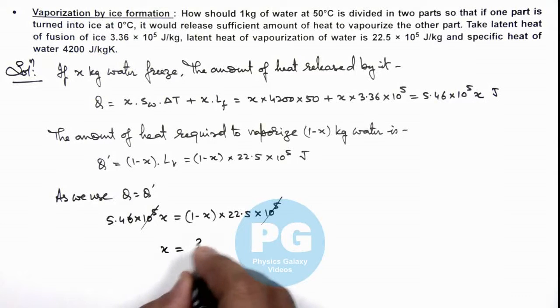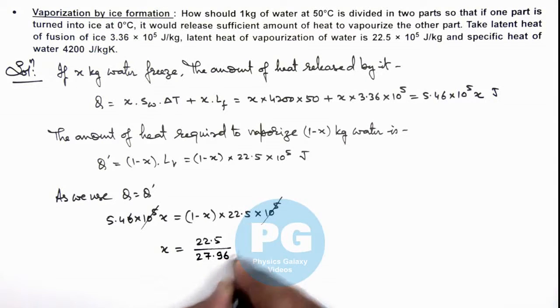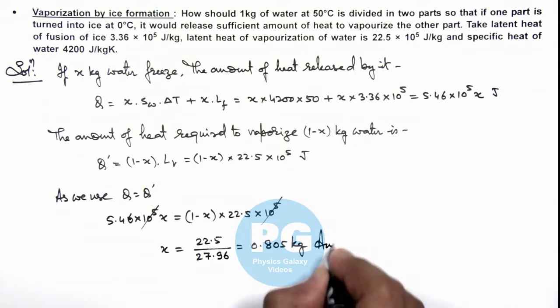We'll be getting is 22.5 divided by 27.96, which is 0.805 kilogram. That is the result of this problem.